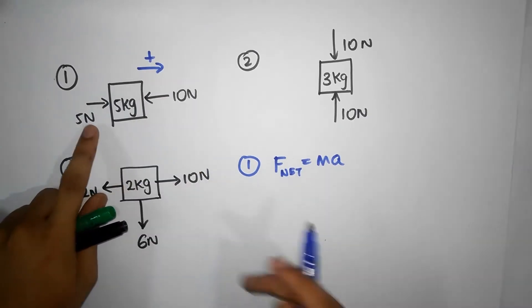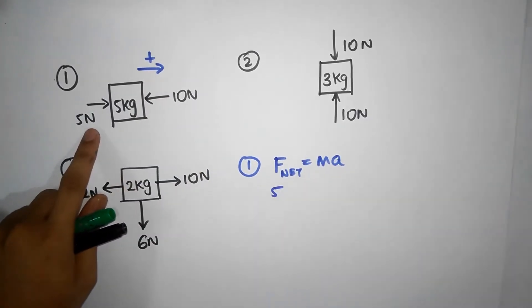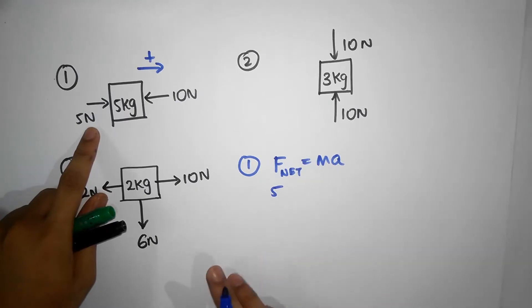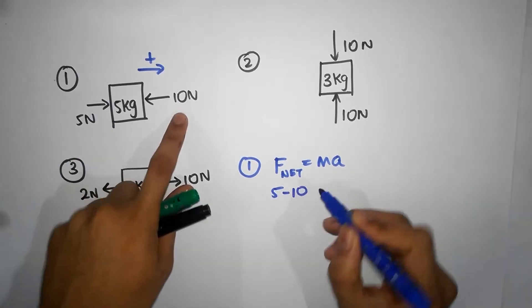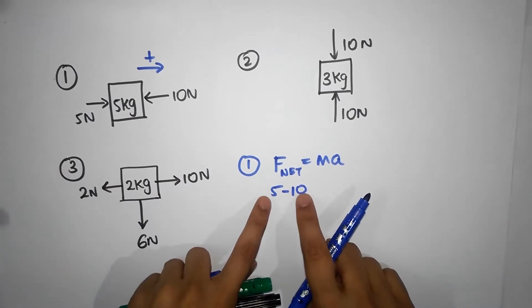Now, since my right side is positive, I have a force of 5 Newtons towards the right, and I have a force of 10 Newtons towards the left, so that's minus 10. These two together form the net force.